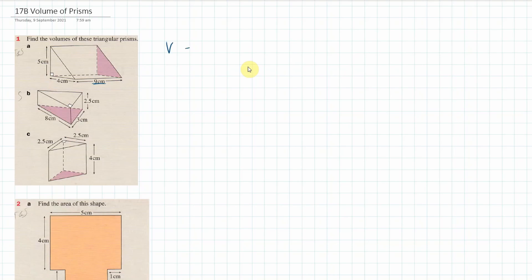So the volume is going to be half times the base of the triangle which is 4, times the height of the triangle which is 5, then times the length of 9. Half of 4 is 2, times 5 is 10, times 9 is 90. So the volume is 90 centimeters cubed — we use centimeters cubed because we're working in three dimensions.